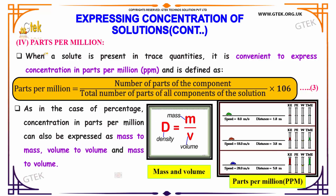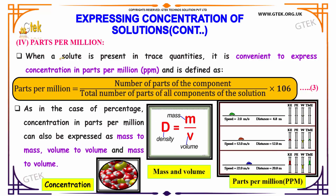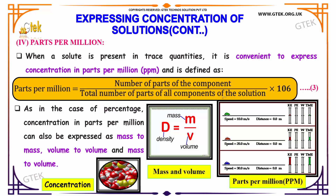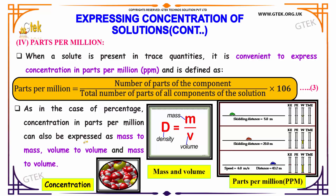The next one is parts per million. When a solute is present in trace quantities, it is convenient to express concentration in parts per million. It is defined as the number of parts of the component divided by the total number of parts of all components of the solution, multiplied by 10^6. As in the case of percentage, concentration in parts per million can also be expressed as mass to mass, volume to volume, and mass to volume.